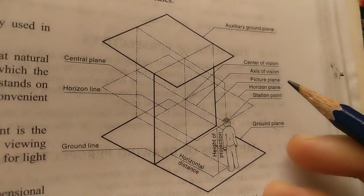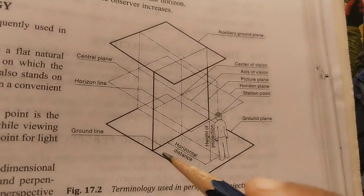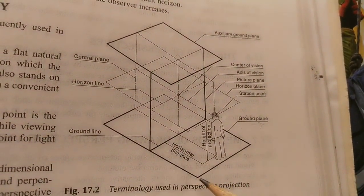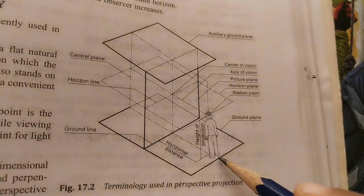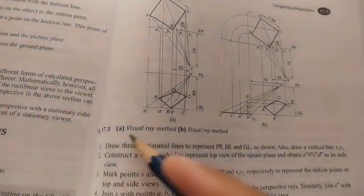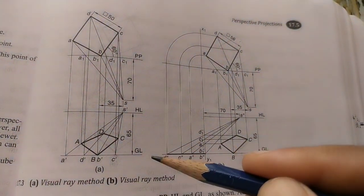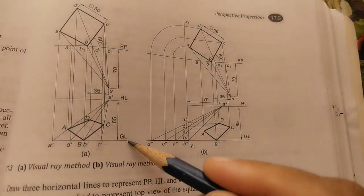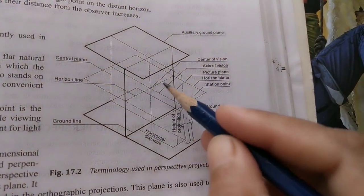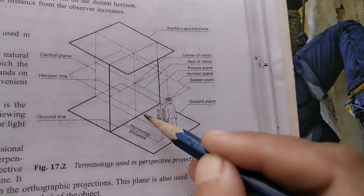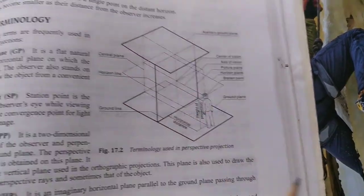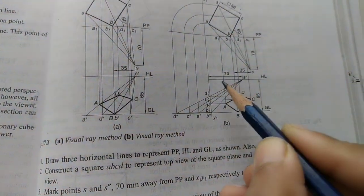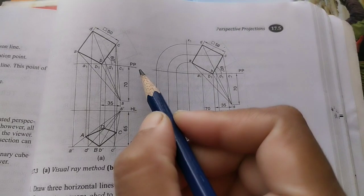In perspective projections, we will now see what lines we draw using drawing instruments. The first line is on the ground plane, so it is called the ground line — abbreviated GL. The observer is standing here, so this is called GL. In all diagrams for perspective projection we draw GL, which means ground line. After the ground line, we take the next line.